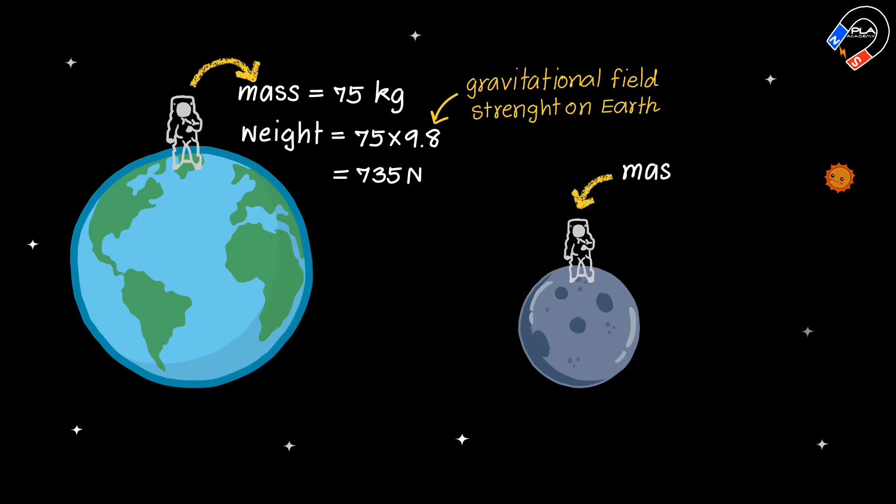When an astronaut is on the Moon, their mass remains at 75 kilograms. However, their weight is less than on Earth by a factor of 6.